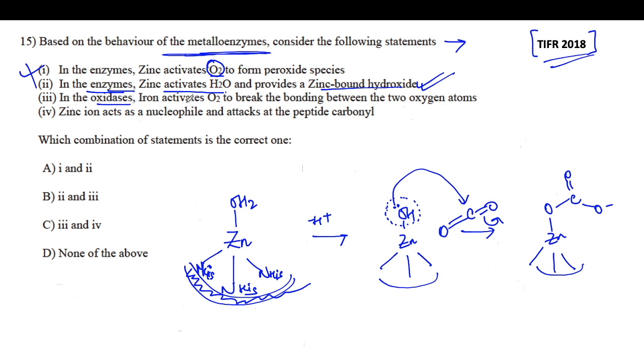In the oxidases, a couple of enzymes where oxidation takes place, iron activates oxygen to break the bonding between two oxygen atoms. This is correct because iron provides electrons to oxygen. If oxygen is being provided electrons, it is going to add it into the antibonding orbital, it will become peroxo and then it's going to cleave. This is correct. Now, zinc ion acts as a nucleophile and attacks the peptide carbonyl. Zinc ion cannot ever do that because zinc is not nucleophilic; zinc is going to be electrophilic in nature. That's why four is wrong. So two and three are your correct options. This is your correct answer.